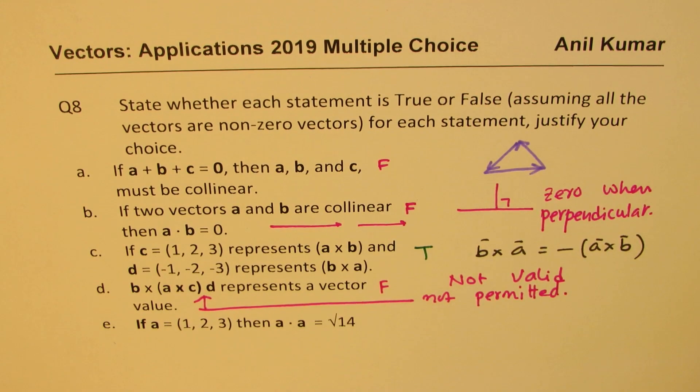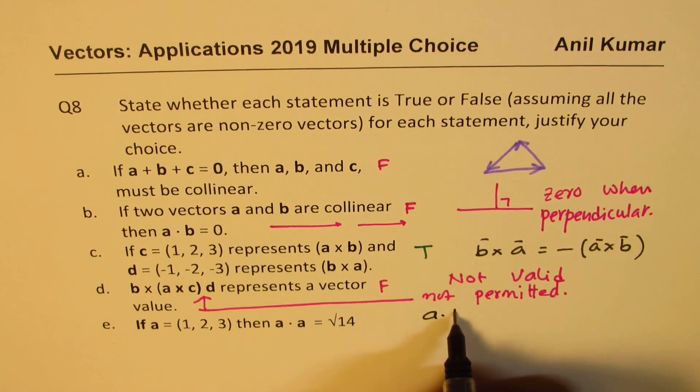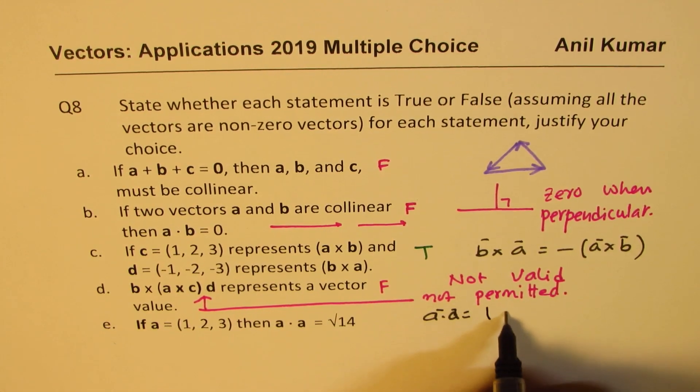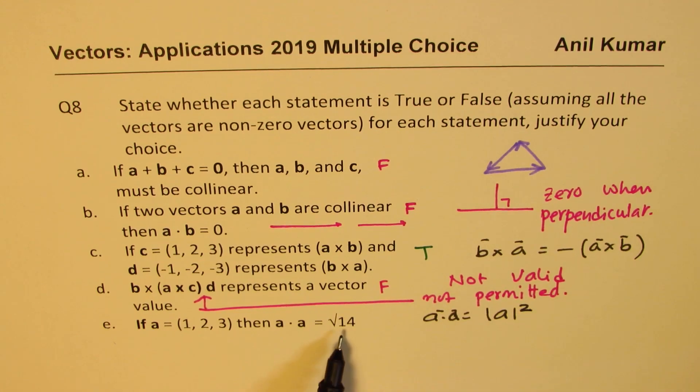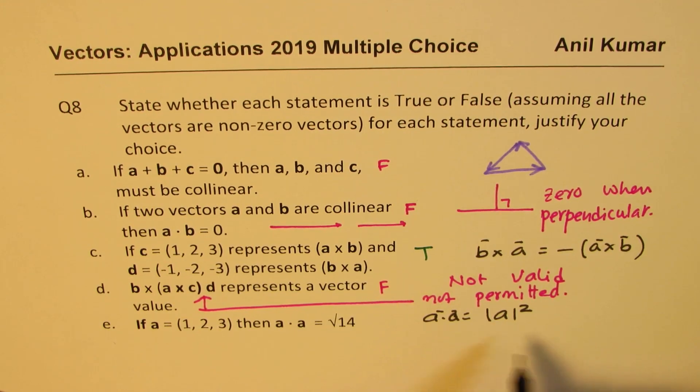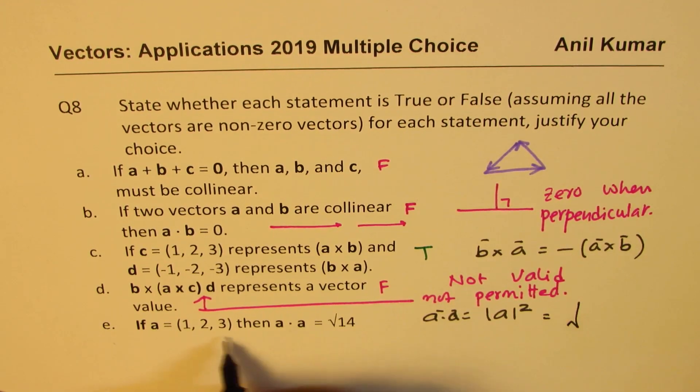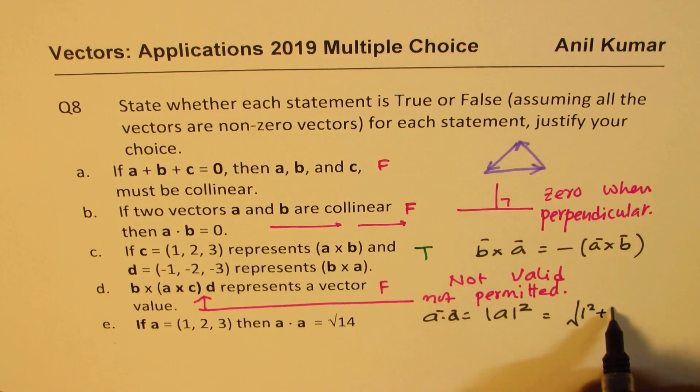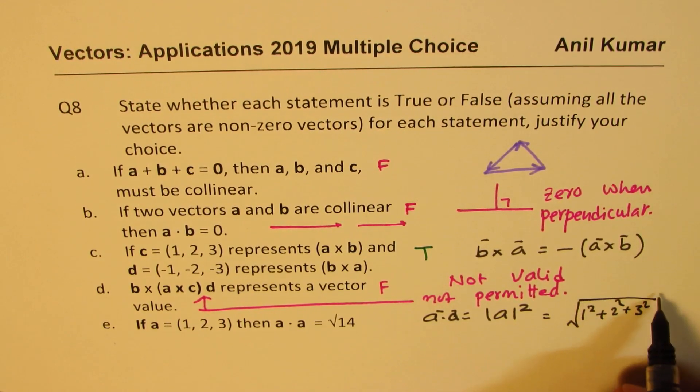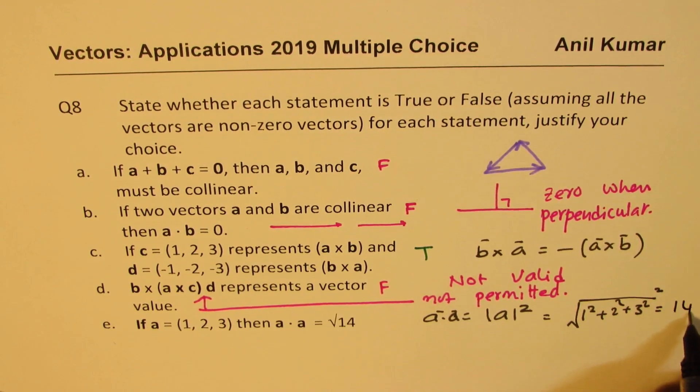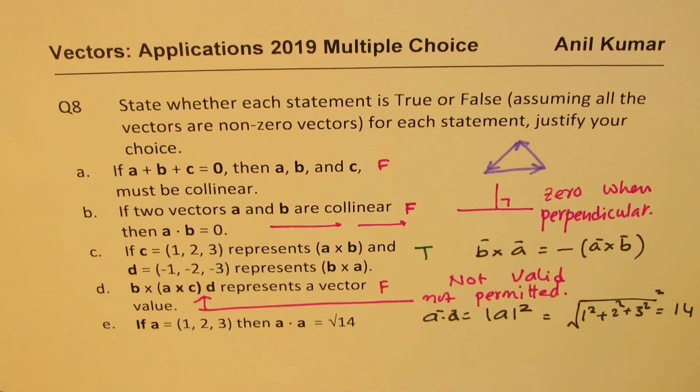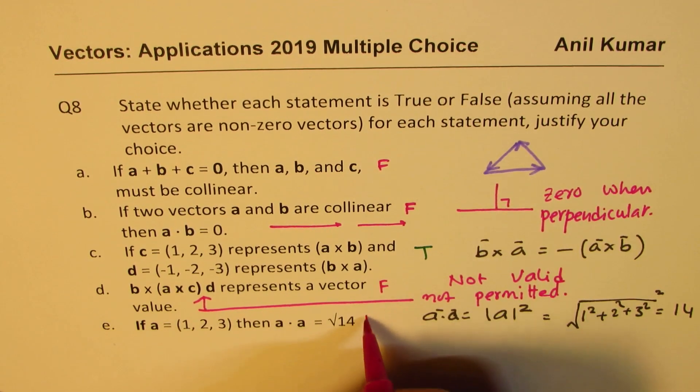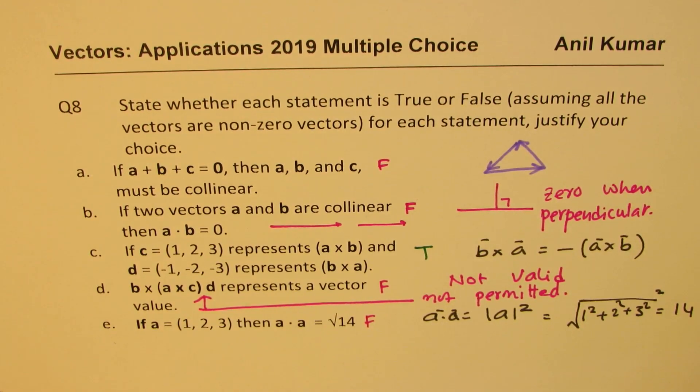The last question here is, if A is (1, 2, 3), and A dot A is √14? Well, A dot A is magnitude of A squared. This is square root, that doesn't work. So basically, A dot A will be equal to square root of one squared plus two squared plus three squared, squared, which is 14. So this one is also false. A dot A is not square root 14, but it is 14.